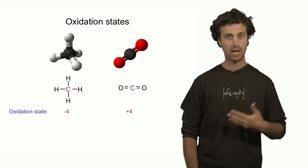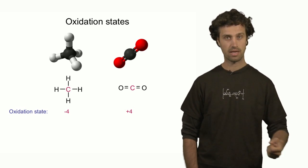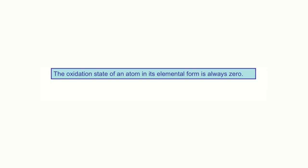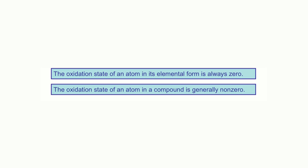We can determine that by following a set of rules. The oxidation state of an atom in its elemental form is zero. For instance, the oxidation state of oxygen in gaseous oxygen, which is its elemental form, is zero. However, the oxidation state of an atom that is part of a compound is generally not zero.